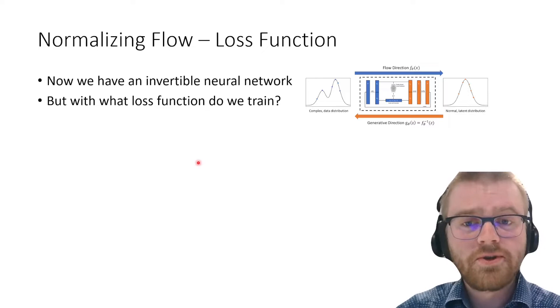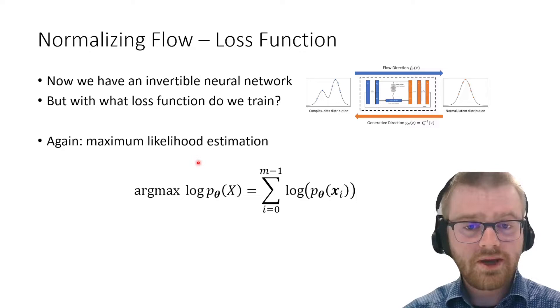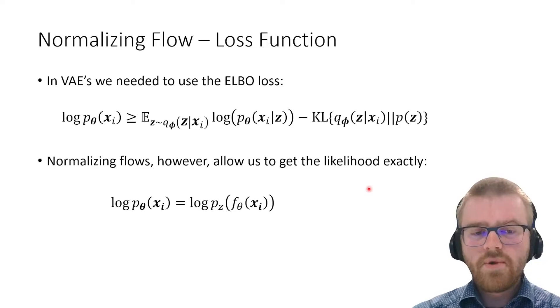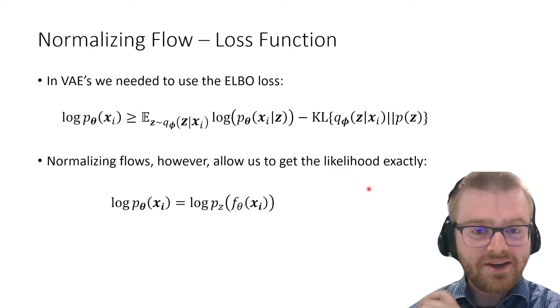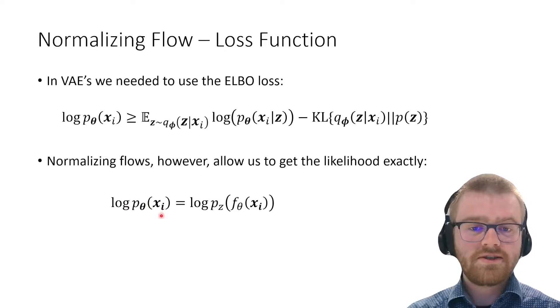Now it's great that we have this invertible neural network, but what loss function are we going to use to train it? Well, similar to the VAE, we're going to do maximum likelihood estimation—find the arg max of the log likelihood given the dataset. In VAEs we use the ELBO loss, but now because normalizing flows are only and exactly bijective, we can actually get the exact likelihood.